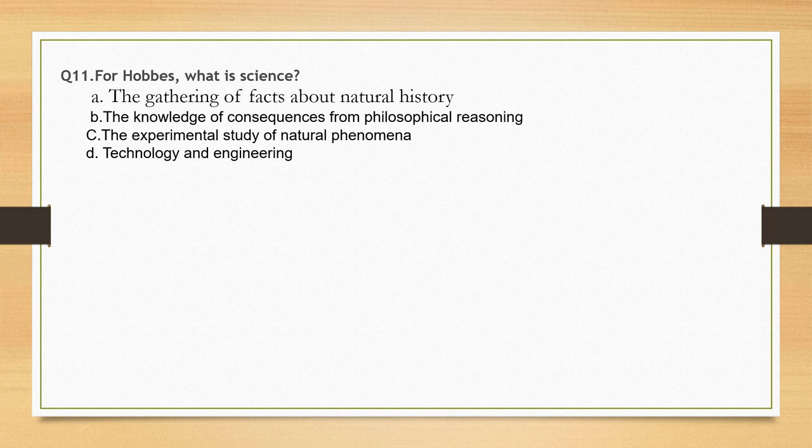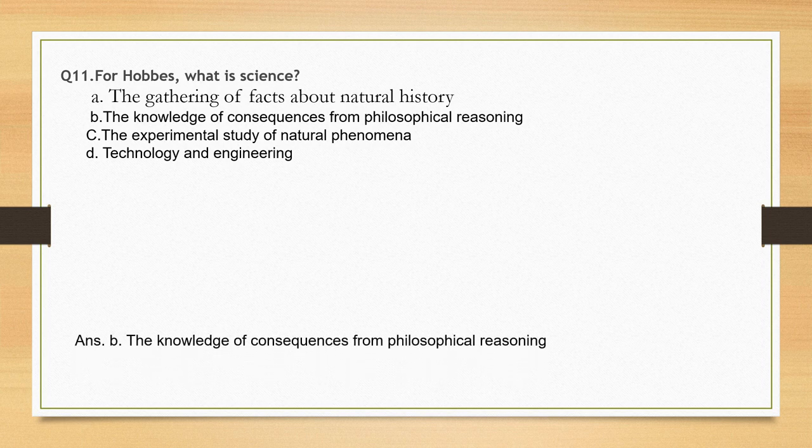For Hobbes, what is science? Options: the gathering of facts about natural history; the knowledge of consequences from philosophical reasoning; the experimental study of natural phenomena; technology and engineering. The correct option is option B: the knowledge of consequences from philosophical reasoning.